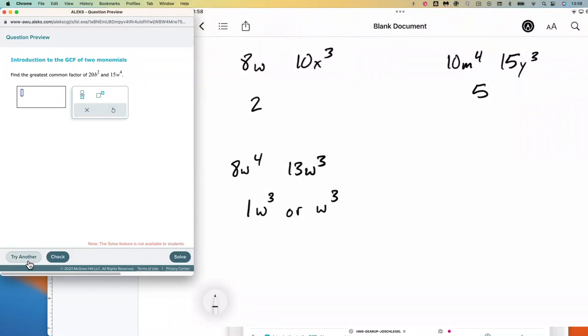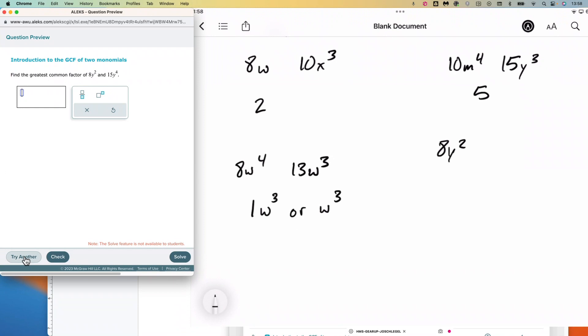I'm going to try and find one that does have the variables that are the same, like this one here. So we have 8y squared and 15y to the 4th. There are no common numbers that go into both 8 and 15, so we just need to look at the variable. The lowest order of the variable there—they both have at least a y to the squared in them.